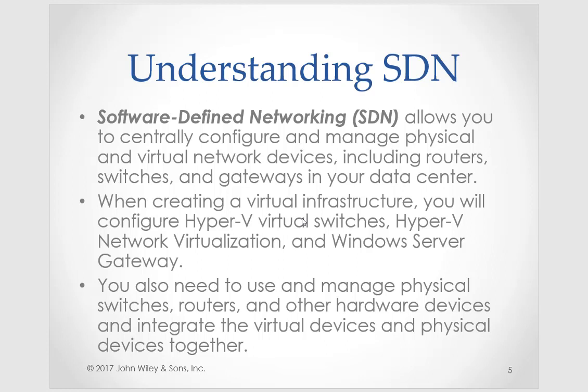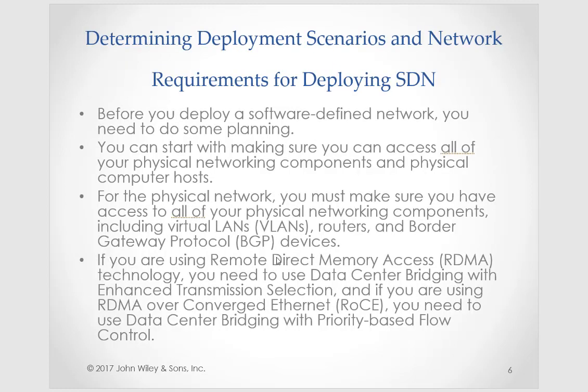When working with your virtual infrastructure, after deciding where to store it, we create virtual network switches. Within that, we can create our Hyper-V network virtualization and our Windows Server gateway. You also need to use and manage physical switches and routers and integrate those virtual and physical devices together. Before deploying an SDN, it takes a lot of planning — you have to make sure you can access all your physical networking components and physical hosts, including VLANs, your routers, and your border gateway protocol devices.